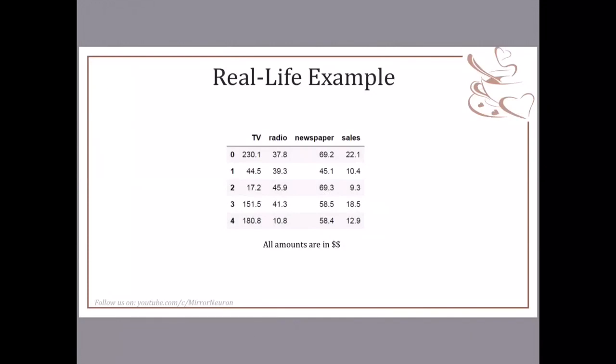Similarly, if I reduce each of them, my sales should also reduce. So that is the main relationship. That means TV, radio, and newspaper are linearly related to the sales and they're independently linear.